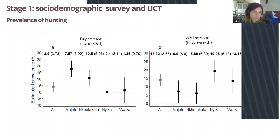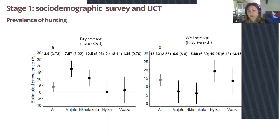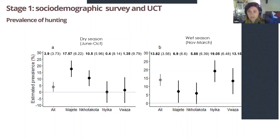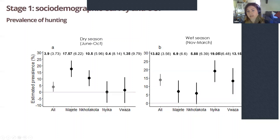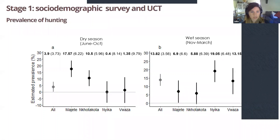These are the results for the prevalence of hunting at all four protected areas. We asked this question for both the dry season and the wet season, and we can see some seasonal trends between the different parks. Generally, hunting was on average around 10% of the communities surrounding these protected areas, peaking at around 19% at Nika in the wet season. These are definitely concerning numbers given how many households actually live around these protected areas.